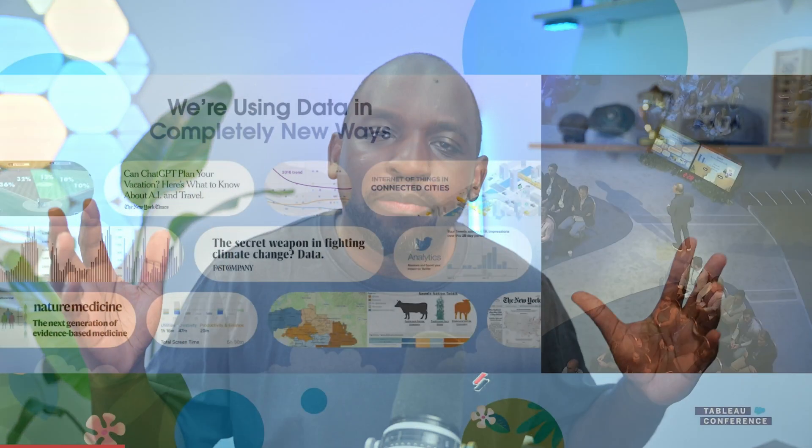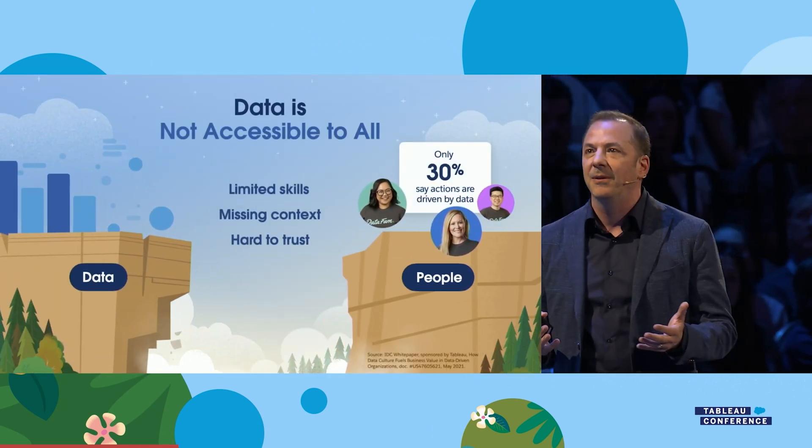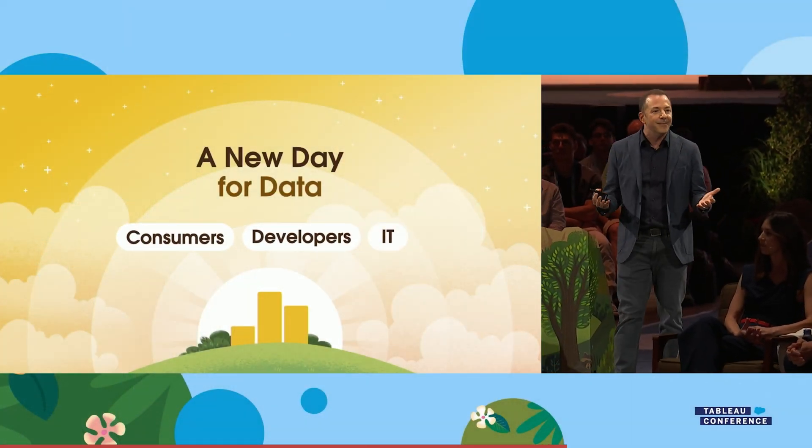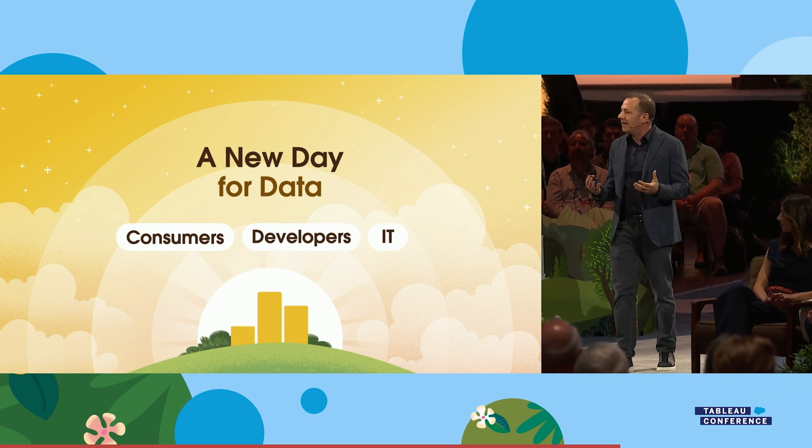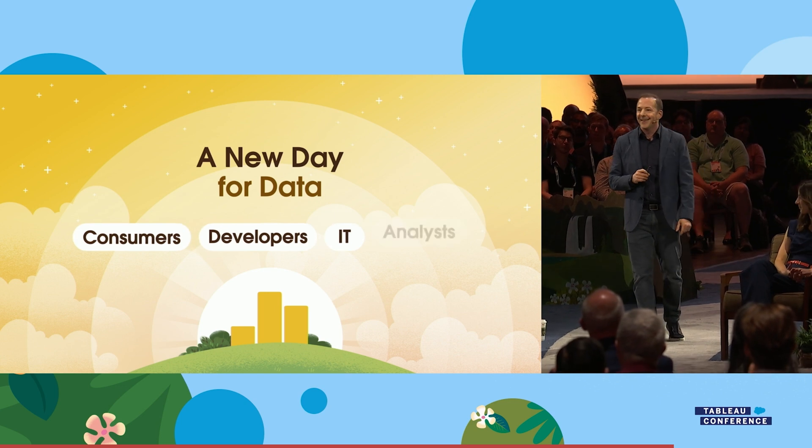To set the context for the rest of the keynote, Tableau talked about the chasm between data and people in every organization — how organizations still feel that not many decisions are data-driven. This is still true. Tableau has been on this mission for 20 years and has acknowledged there's still a lot of work to do. They announced a new day for data as a tagline, signaling a new direction. They were speaking to four groups: consumers, developers, IT professionals, and analysts. If you're any one of those users, this keynote is for you.